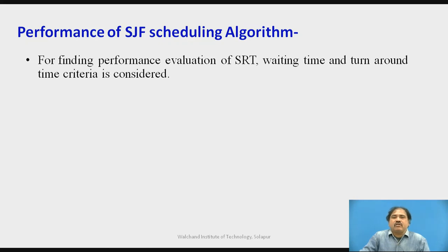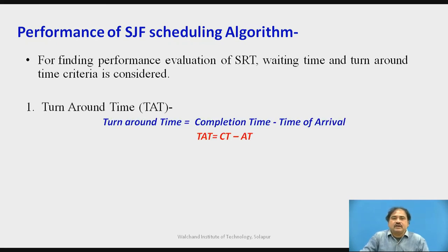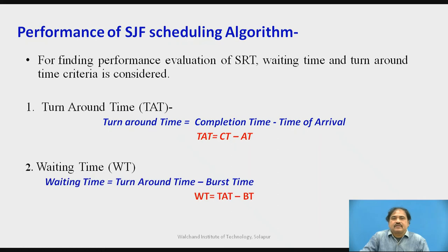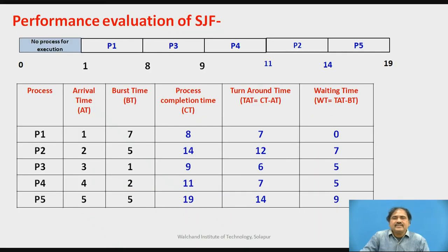To evaluate the performance of the SJF algorithm, we consider two performance parameters. The first is Turnaround Time (TAT), which is the difference between the completion time of a process minus the arrival time of a process. The second is Waiting Time, which is the difference between the turnaround time and the burst time. From the Gantt chart, we calculate the completion time, then the TAT, and then the waiting time.